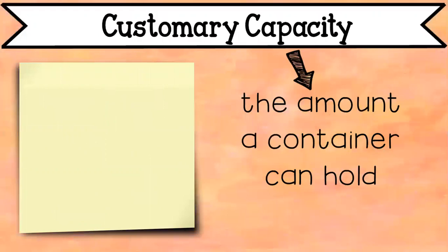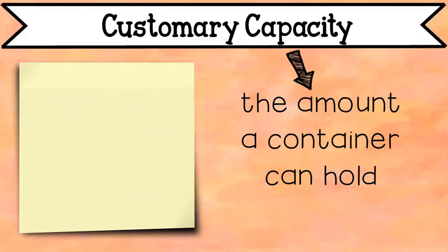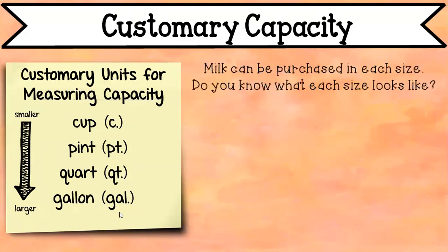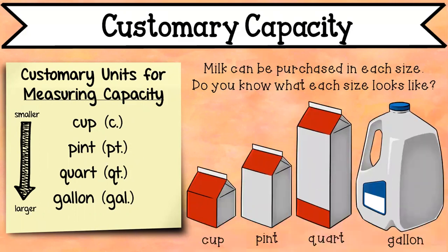Now we've moved on to capacity. Here's a helpful diagram. It starts with cups, pints, quarts, and gallons. It says milk can be purchased in each size — do you know what each size looks like? Here's an example to give you a visual: we know what a gallon is, you can get a quart, you can get a pint, you can get a cup.